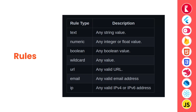Talking about rule types: text for any string value, numeric for any integer or float value, boolean for any boolean value, wildcard for any value, URL for any valid URL, email for any valid email address, and IP for any valid IP address. There is also one more rule type — embedded document.